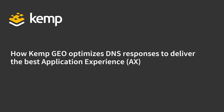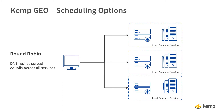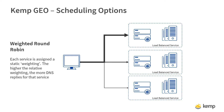Let's look at some of the ways that KEMP's Geo can provide the best application experience in multi-site environments. The simplest approach is to spread traffic across all available resources equally, and KEMP's Geo will adjust scheduling based on the number of active connections. However, in the real world, it is common to have sites with different capacities.